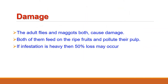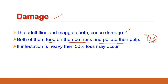Now the damage. The adult flies and maggots both cause damage, feeding on ripe fruits and polluting their pulp. The main damage is caused by the maggots as they are present inside the fruit, riddling them and polluting the pulp. Maximum damage is caused in July and August when about 50% of fruits are under severe attack by this pest.